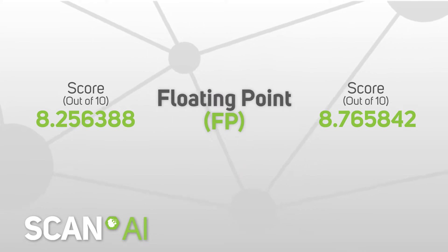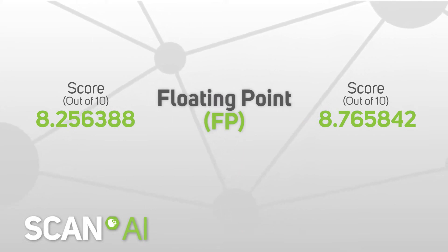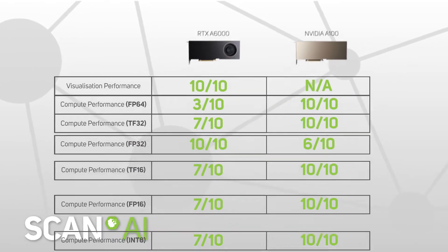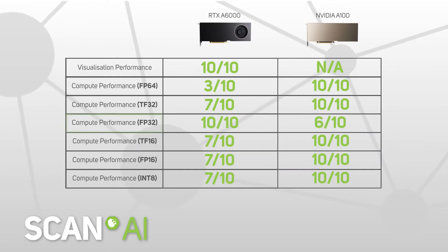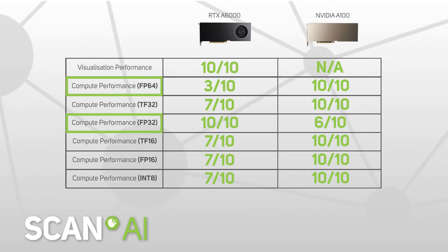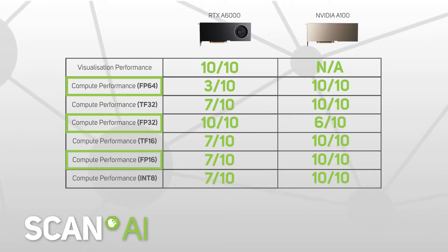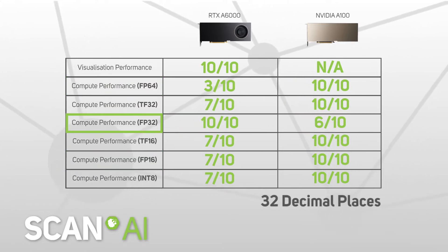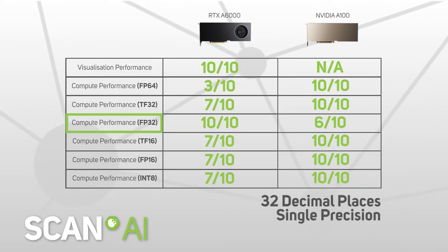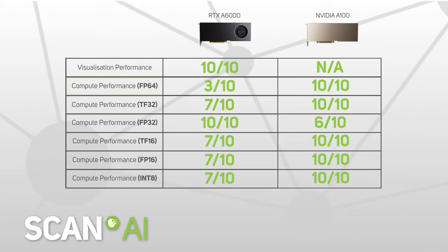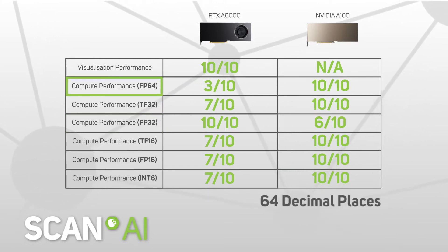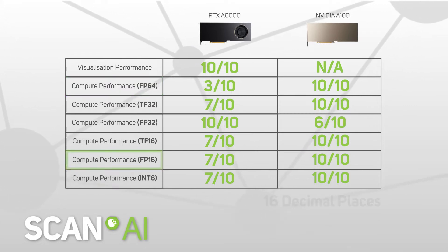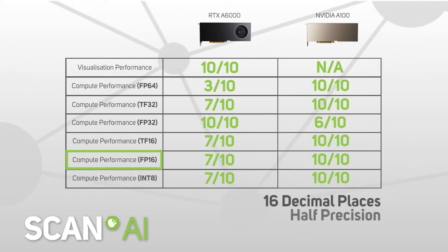This is called floating points, abbreviated to FP. Within GPU specification sheets you'll see terms like FP32, FP64, or FP16. FP32 refers to 32 decimal places and it's termed single precision. FP64, twice as precise at 64 decimal places, is called double precision, and FP16, being half as precise, is termed half precision.